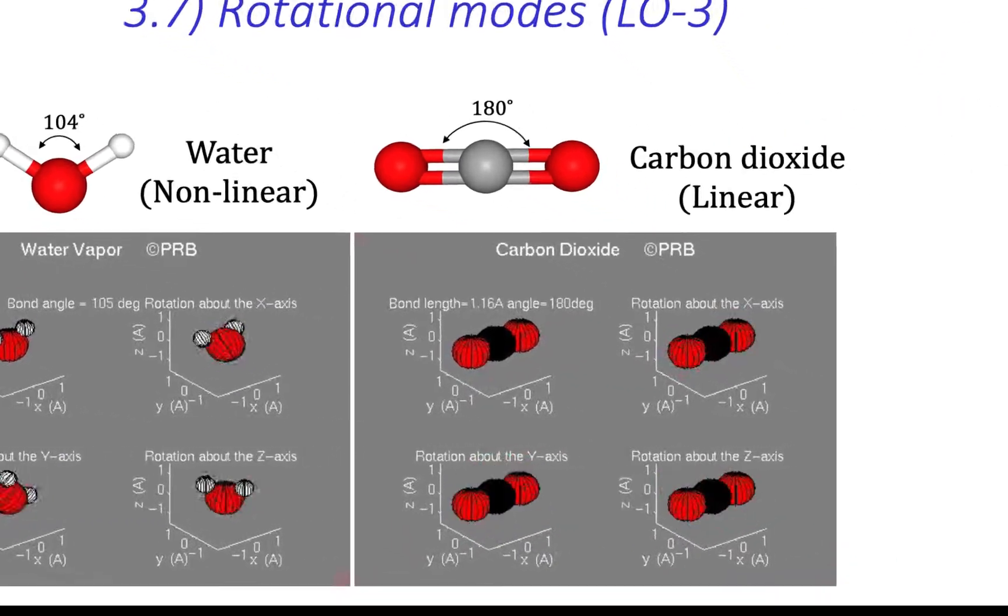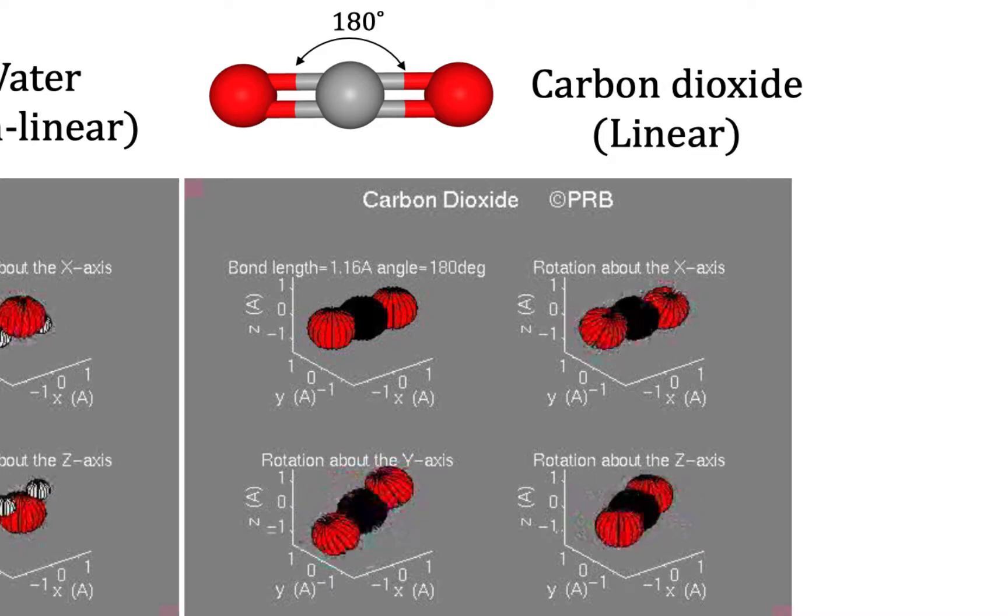This video shows the rotational modes for carbon dioxide, a linear molecule. Once again, we see rotation about the X axis, the Y axis, and the Z axis.